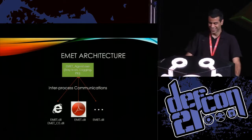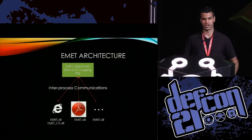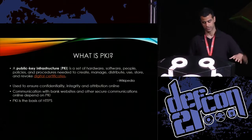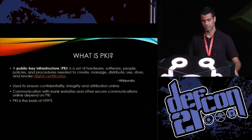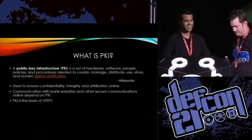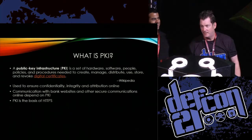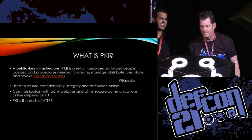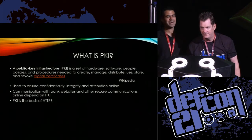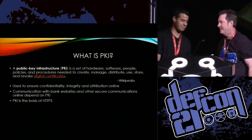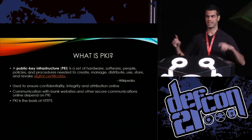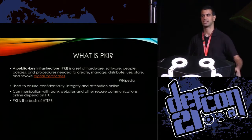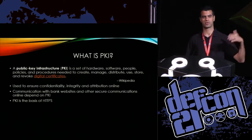Basically anything that uses CAPI is protected, including other browsers — Chrome or whatever — protected by this PKI mitigation. PKI stands for public key infrastructure, which is basically about dealing with digital certificates. This is used to ensure confidentiality, integrity, and attribution online, and it's the basis of HTTPS — dealing with your bank website or other secure websites.